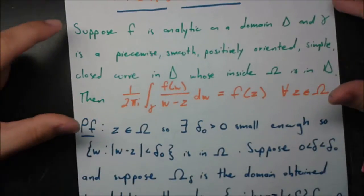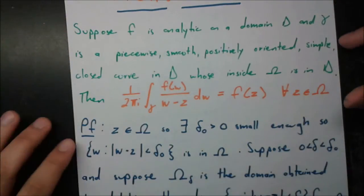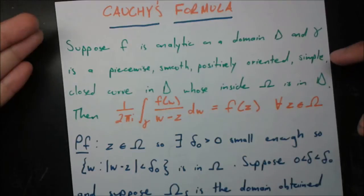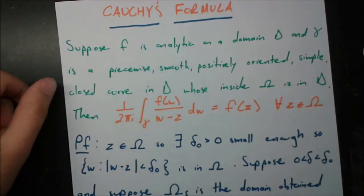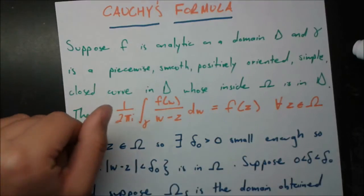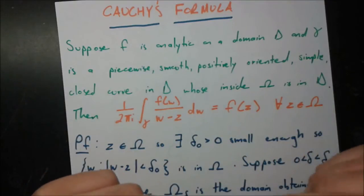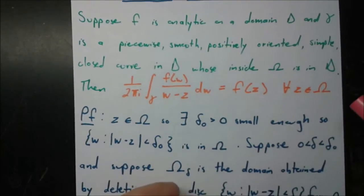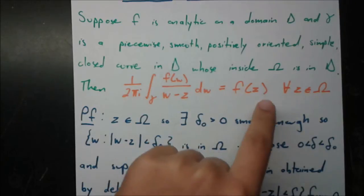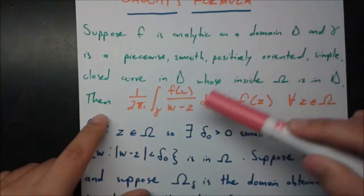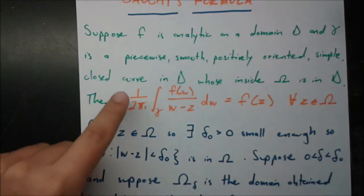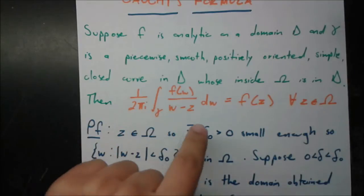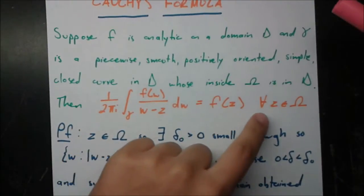In green I've written the statement of the formula, and in orange is the actual formula. It says: suppose F is analytic on a domain D — a condition we've come across before — and gamma is a piecewise smooth, positively oriented, simple closed curve in D, whose inside omega is also in D. The only different modifier from Cauchy's theorem is this 'positively oriented.' Then we have: one over two pi i, times the line integral of F of W over W minus Z, dW, equals F of Z for all Z in omega.